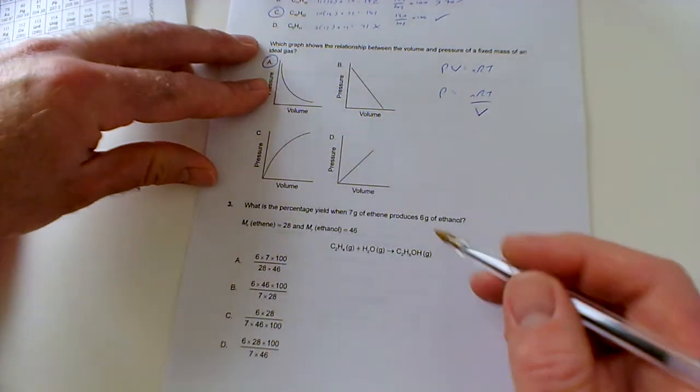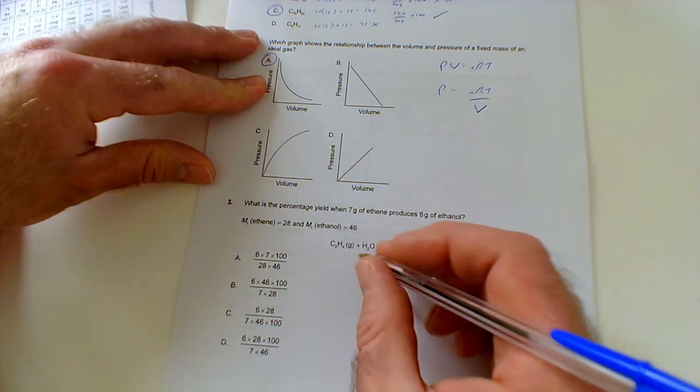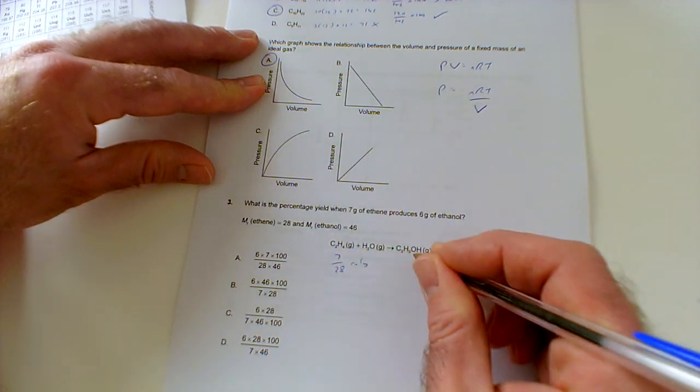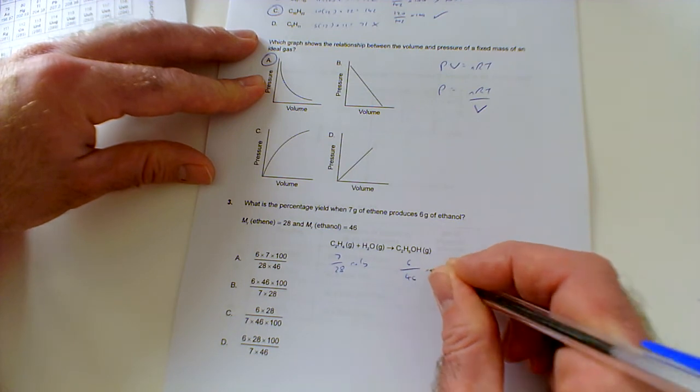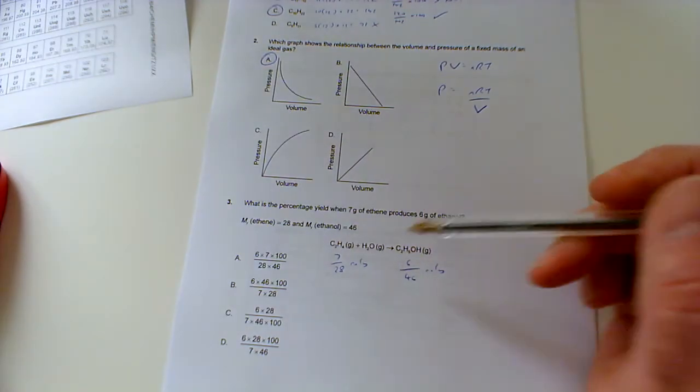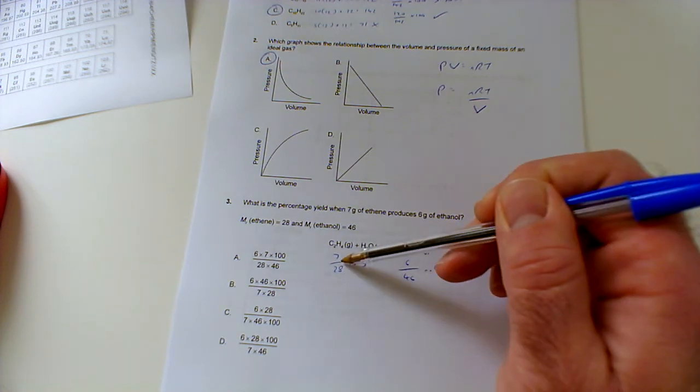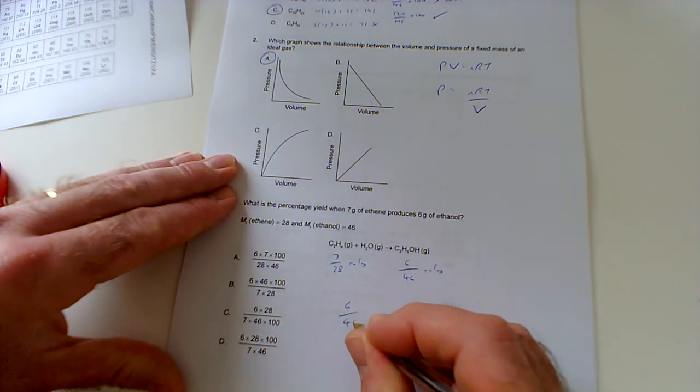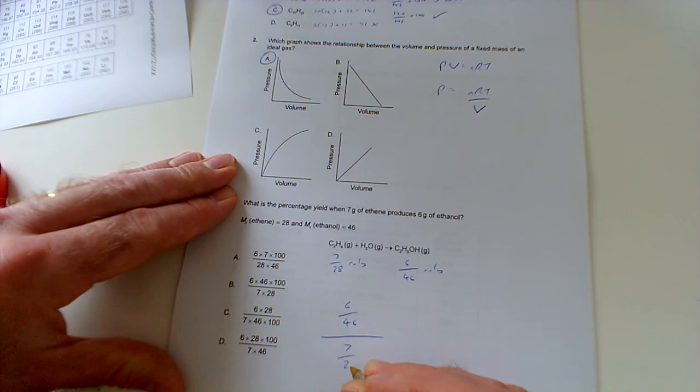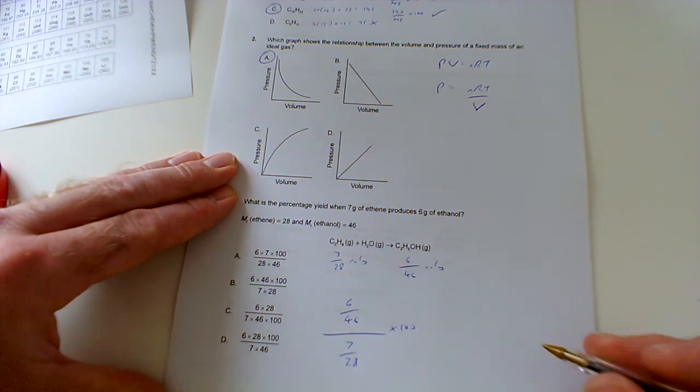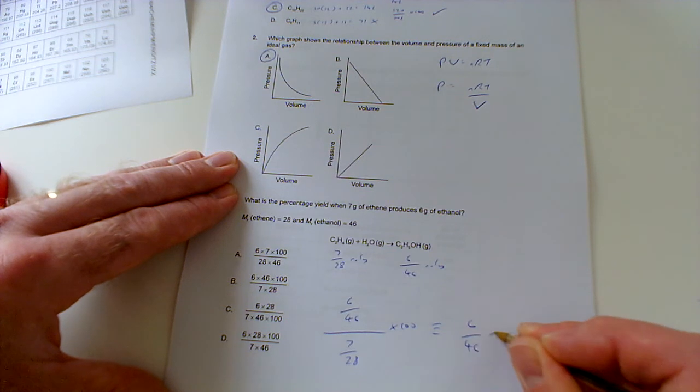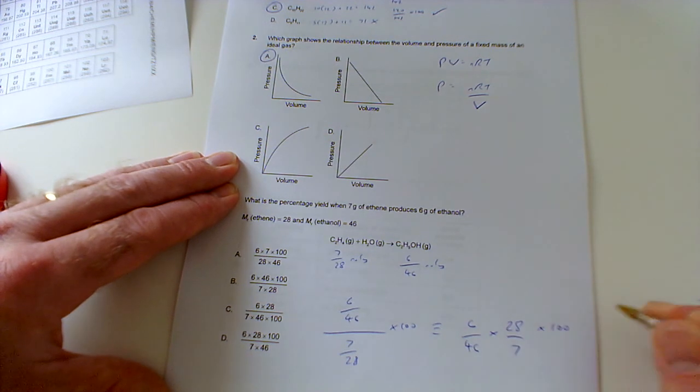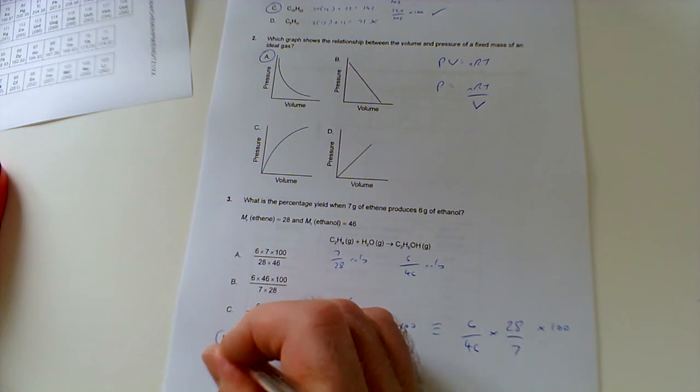Question three: what is the percentage yield when seven grams of ethene produces six grams of ethanol? The number of moles of ethene is seven over 28, and the number of moles of ethanol made would be six over 46 moles. It's a one-to-one ratio, so that's the maximum number of moles that we could have made—that's the theoretical amount. The percentage yield would be the number of moles we got, six over 46, divided by the number of moles we could have got, seven over 28, times 100. When you've got one fraction divided by another fraction, that's equivalent to six over 46 times this fraction the other way around, so times 28 over 7, then times 100. That matches up well with D.